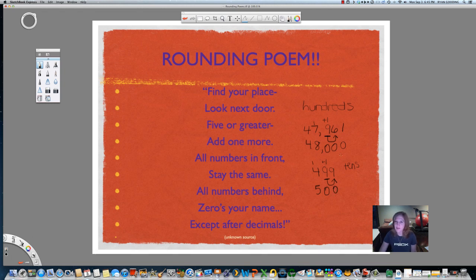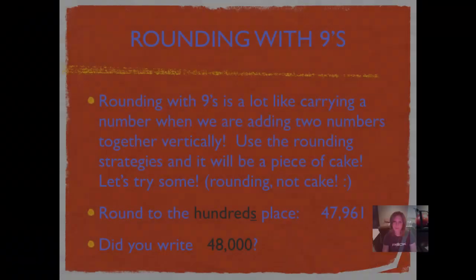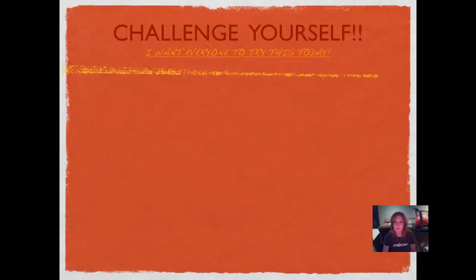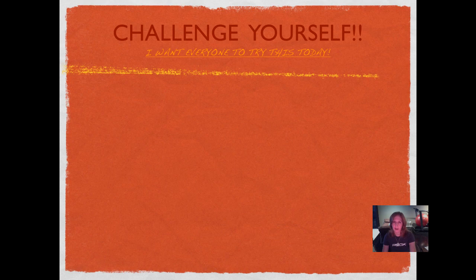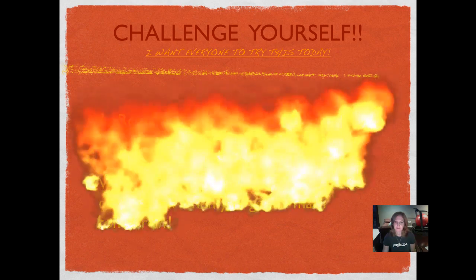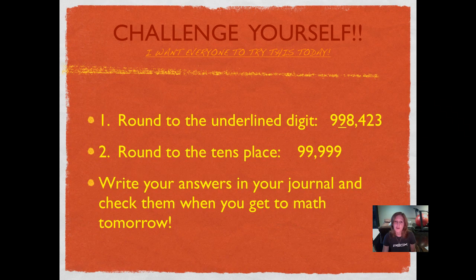Wasn't too bad! I think using the strategy will really help us be successful. Challenge yourself — today's challenge problem has to do with rounding to the nines. It's tough, but it's a great feeling when you know you've mastered it, so I want everyone to try this today. Your first problem is to round to the underlined digit, and your second one is to round to the tens place. Write your answers in your journal and come back to school tomorrow ready to check them out.